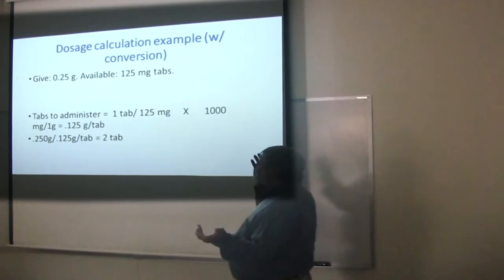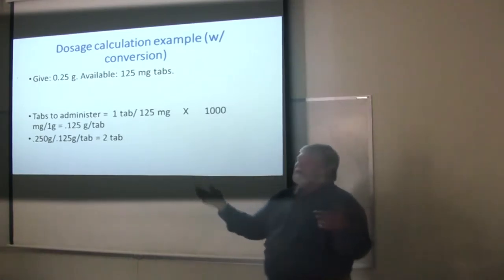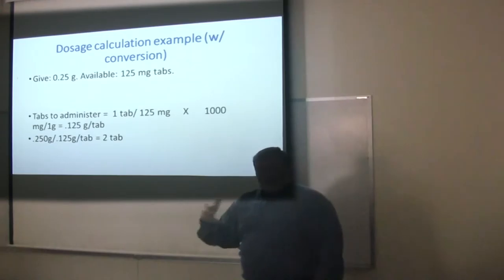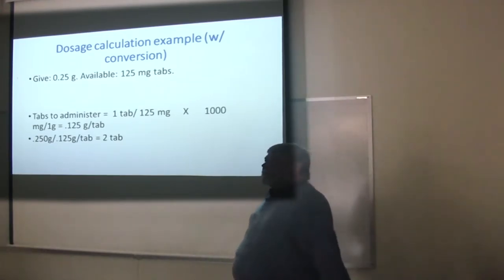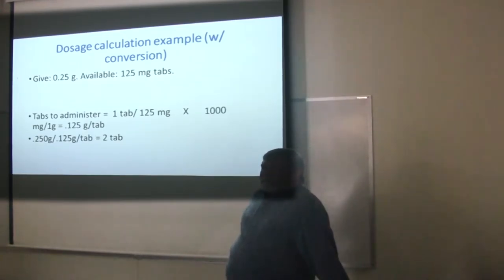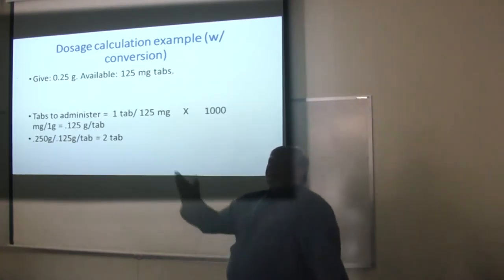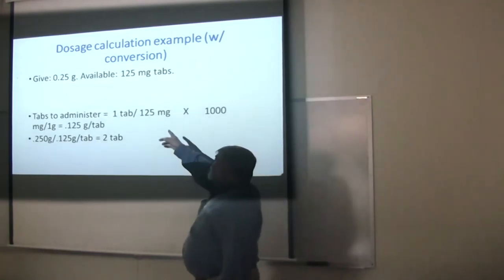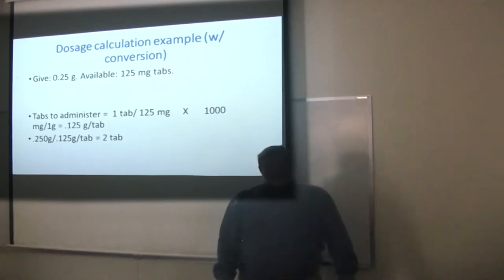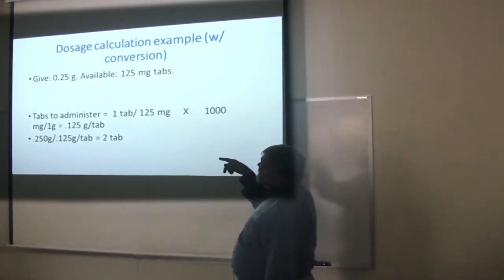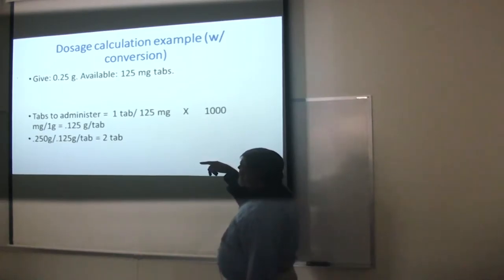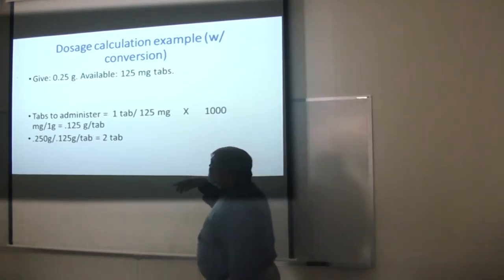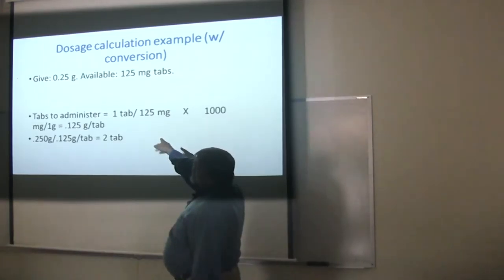We have an order that says give a quarter of a gram, and we have 125 milligram tablets. Ultimately we want to know how many tablets we're going to give. A tablet is 125 milligrams. If we convert: 125 milligrams divided by 1000 is 0.125 grams — a tablet is an eighth of a gram. We don't deal in fractions because that's too confusing.